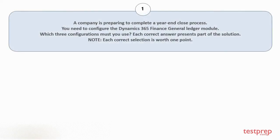Question number 1: a company is preparing to complete a year-end close process. You need to configure the Dynamics 365 Finance General Ledger module. Which three configurations must you use? Each correct answer presents part of the solution. Each correct selection is worth one point.